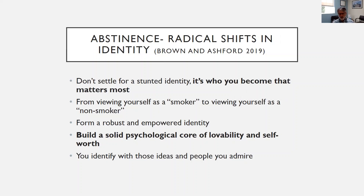Radical shifts in identity are important to abstinence. Brown and Ashford discuss this in their 2019 article — you don't want to settle for a stunted identity, because it's who you become that matters most. Patients may carry negative self-images from past mistakes, but it's really about who they're becoming. Like with someone who smokes cigarettes, it's shifting from viewing themselves as a smoker to a non-smoker. They want to form a robust, empowered identity and build a solid psychological core of lovability and self-worth. You identify with those ideas and people you admire.